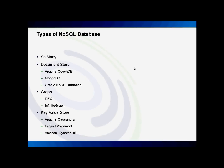You can have a graph database type, which consists of nodes that can be linked to each other. And you have a key-value store, which is the closest to a relational database, where every row has its own key value and that key value is propagated amongst every single server that the database is distributed across. For document store databases, the most popular ones seem to be Apache CouchDB, MongoDB, and Oracle NoSQL Database. For graph databases, the most popular ones seem to be DEX and Infinite Graph. For key-value stores, the most popular ones seem to be Apache Cassandra, Project Voldemort, and Amazon DynamoDB.